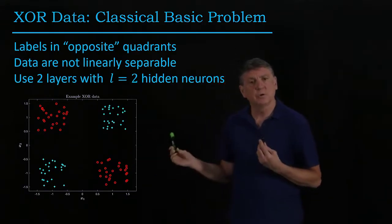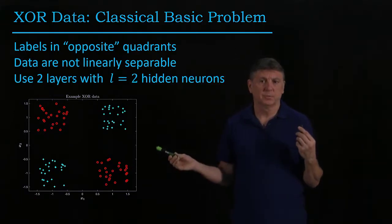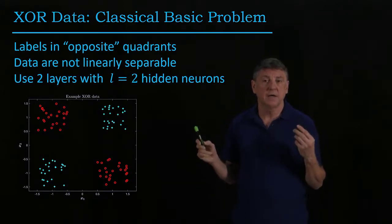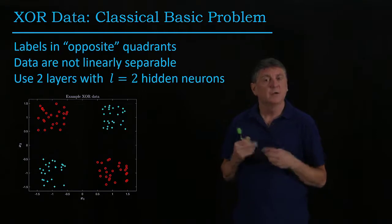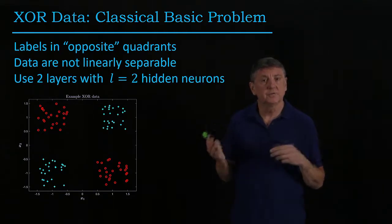And with a single neuron, we can't solve this exclusive OR problem, because there's no single line, no hyperplane, which in 2D is a line, that will separate the ones from the zeros.